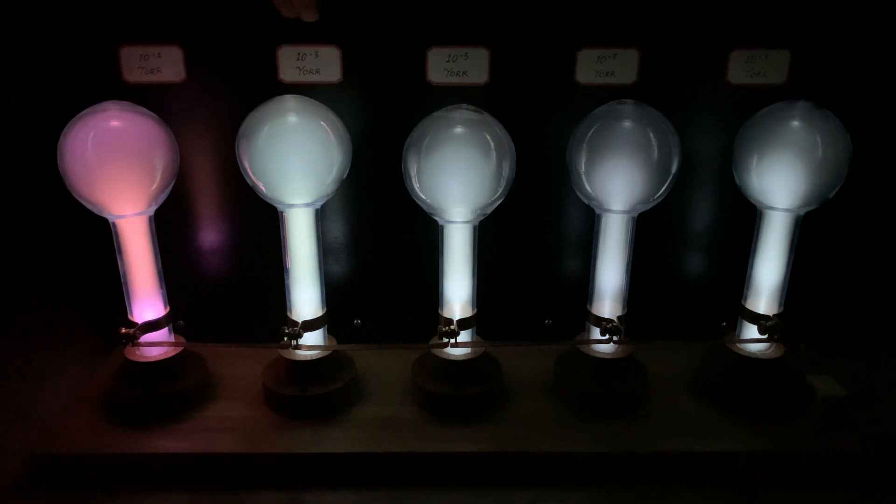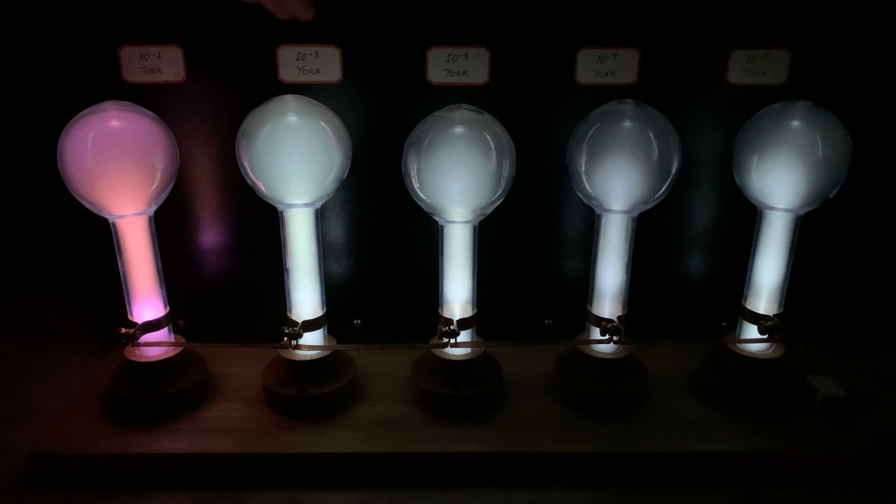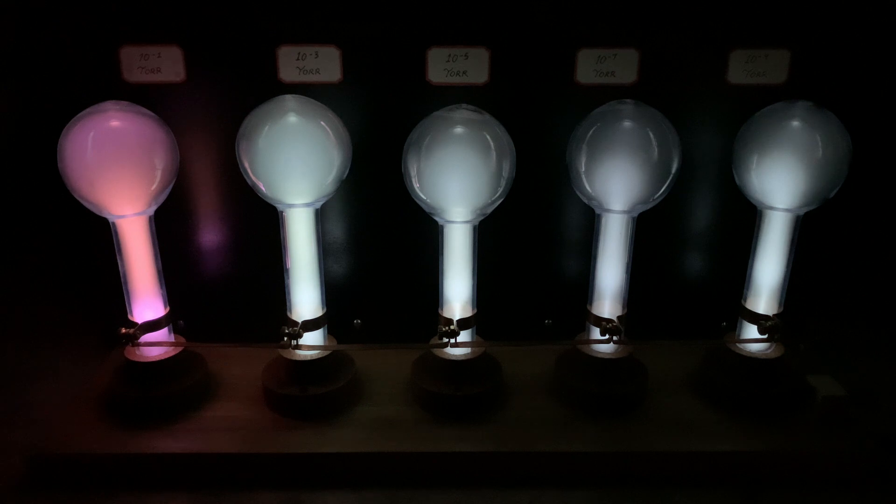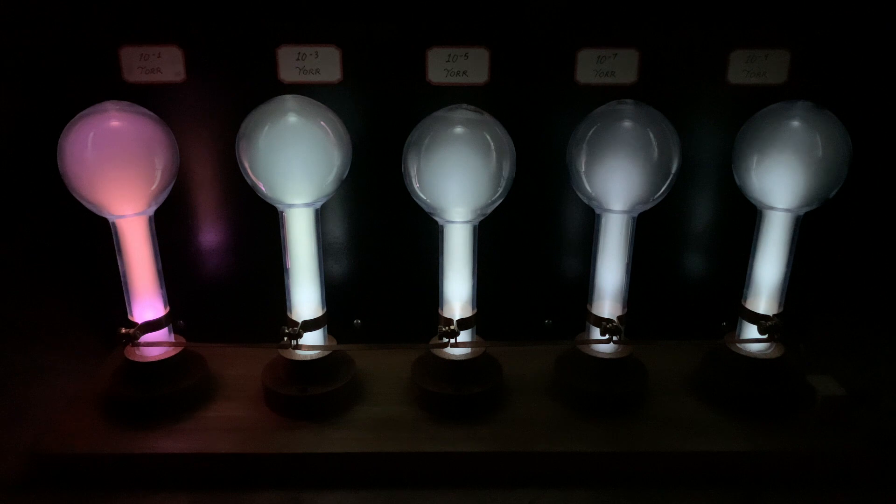Progressing over, we have the 10 to the minus 3 torr lamp which gives off more or less a turquoise appearance, combined with oxygen and nitrogen phosphorescence. The bluish color is associated with the excitation of oxygen trapped inside the bulb from the evacuation process.